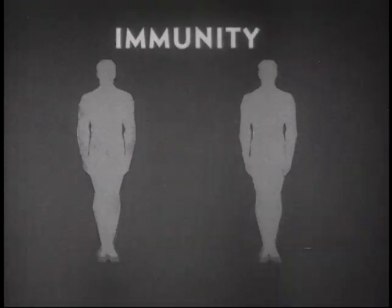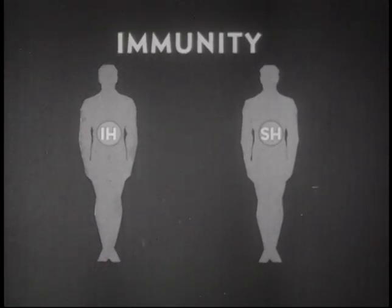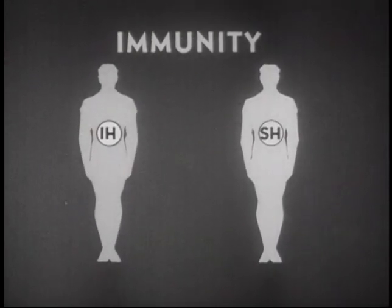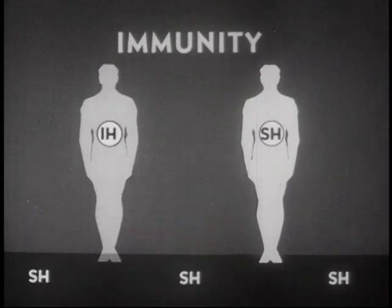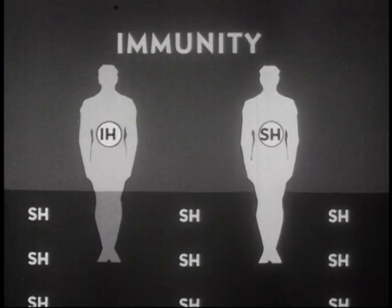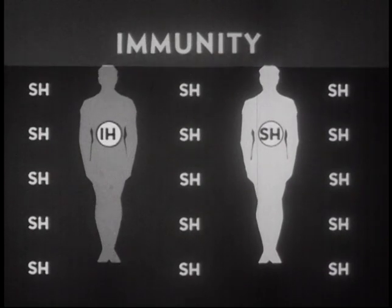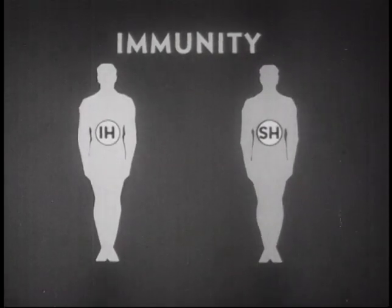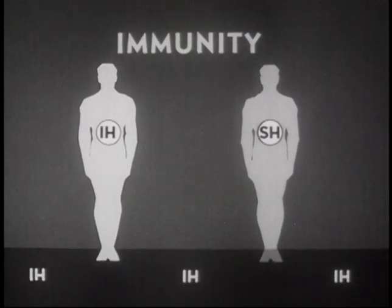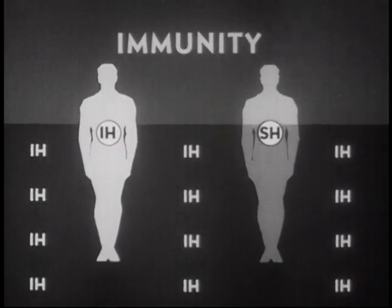Active infection with either IH or SH virus seems to produce immunity to that particular virus. Cross-immunity does not exist — previous infection with IH virus will not prevent a later SH infection. Conversely, previous SH infection will not prevent IH infection.